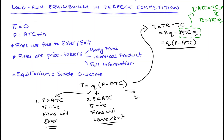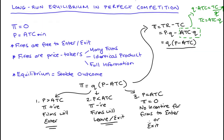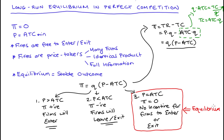Lastly, it can be the case that price falls exactly equal to average total cost. If this is the case, the value of the term in parentheses will be equal to zero because price and average total cost cancel each other out, and so profit comes out equal to zero as well. If this happens, there will not be any incentive for firms to either move in or out of the industry. This is our equilibrium result because the number of firms will remain stable. If price is either above or below average total cost, these will not be equilibrium outcomes since these situations would lead to firms wanting to either exit or enter the industry.